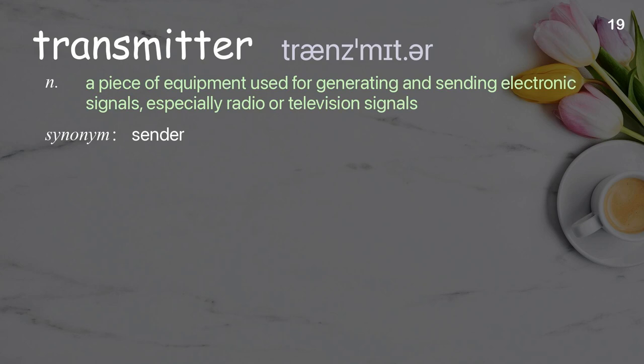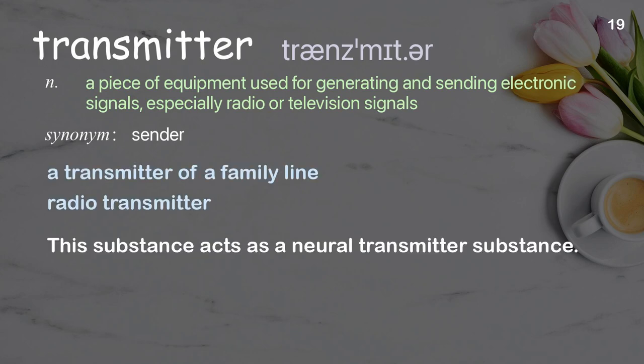Transmitter: A piece of equipment used for generating and sending electronic signals, especially radio or television signals. Examples: A transmitter of a family line. Radio transmitter. This substance acts as a neural transmitter substance.